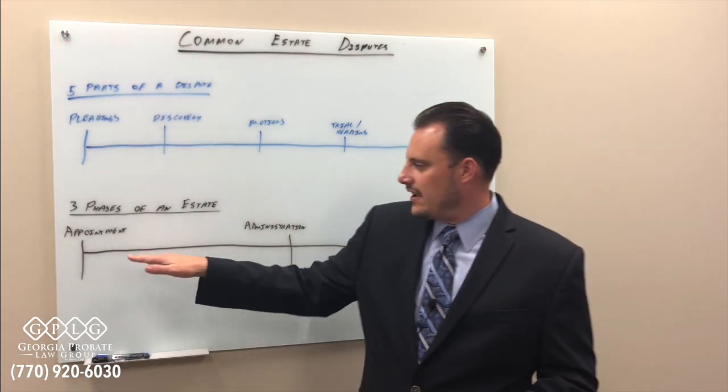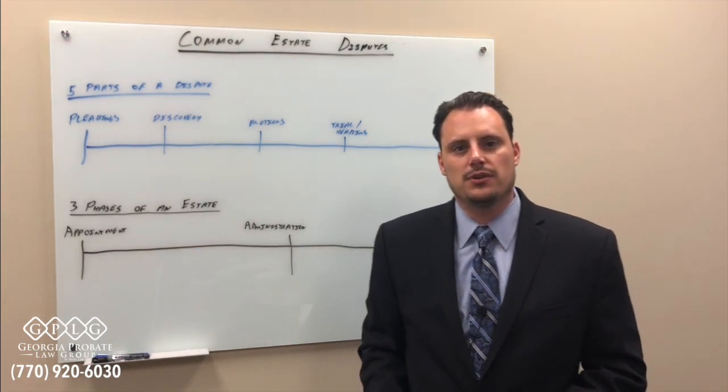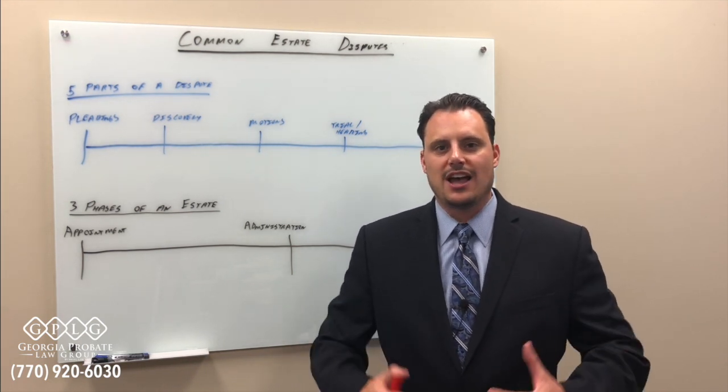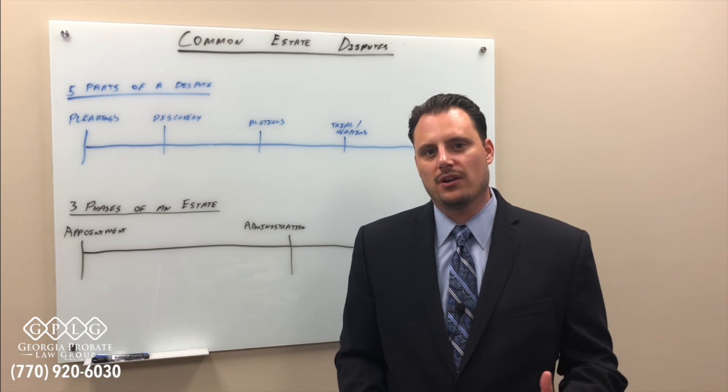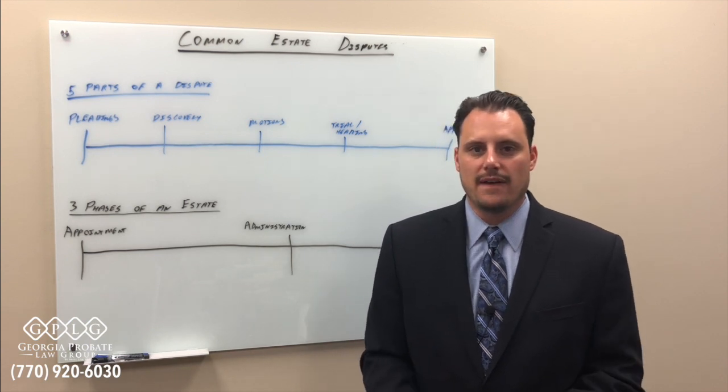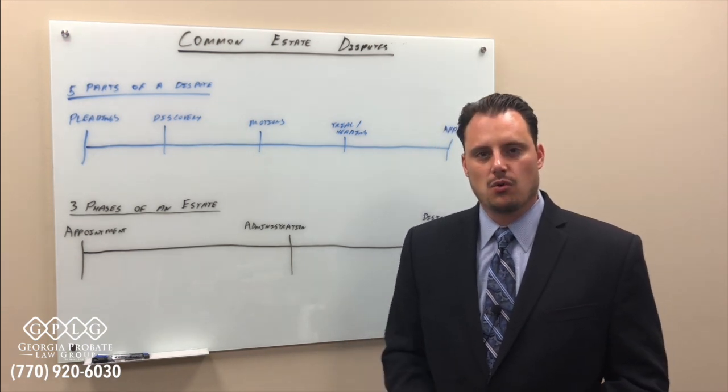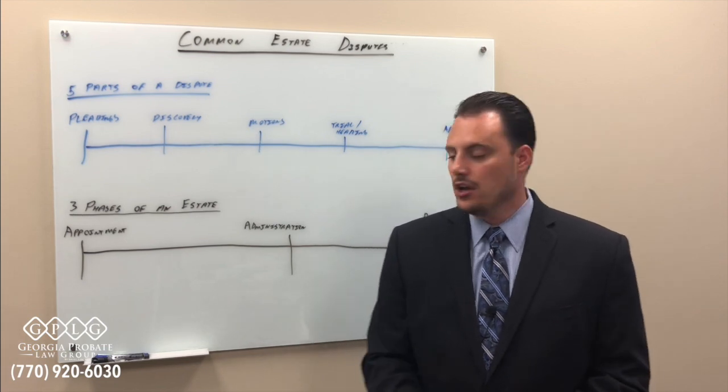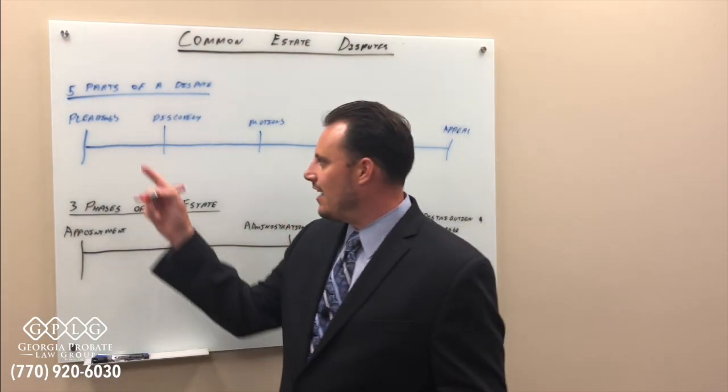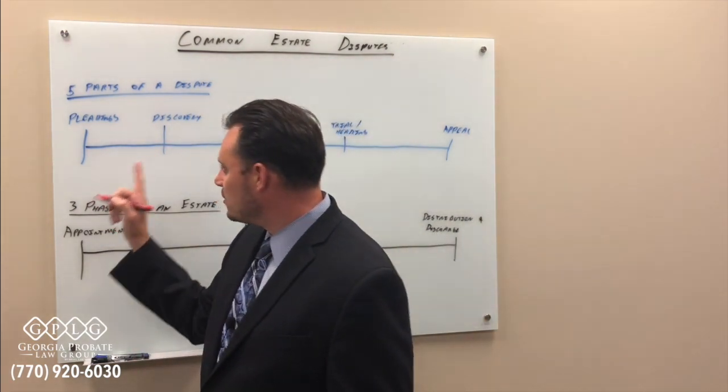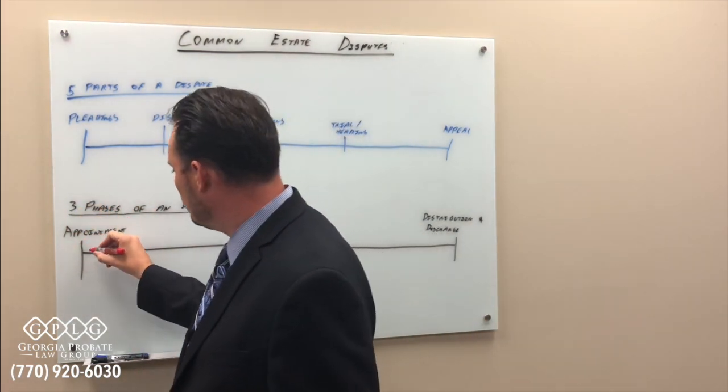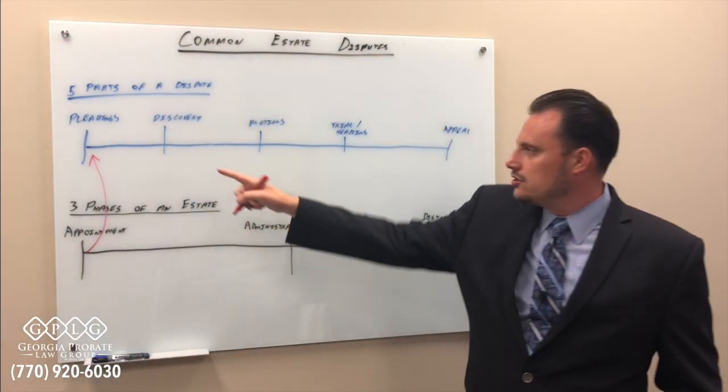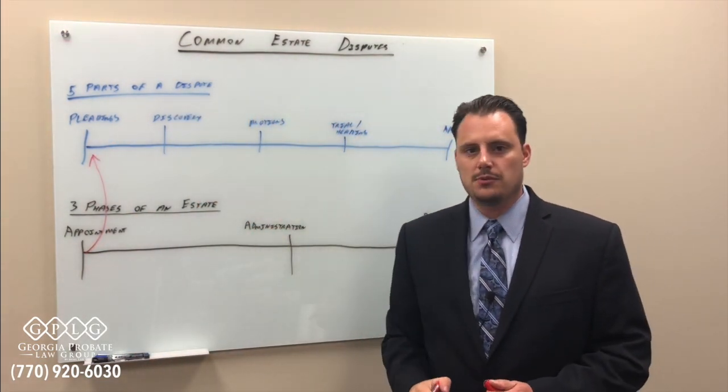So in the appointment phase, a common example of a dispute is a will is filed with the court and another party comes forward and says, I don't think that that will is valid. I think it's a fraud. And so we're asking the court to declare that that will is invalid. So those are the allegations or those are the pleadings that are made and that starts us on a dispute. So we go from the appointment phase to the first part of a dispute, pleadings.